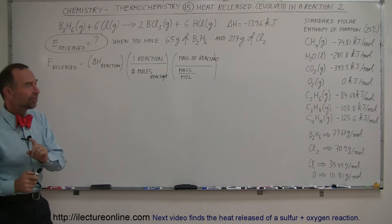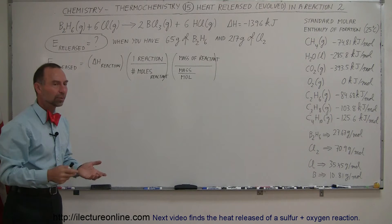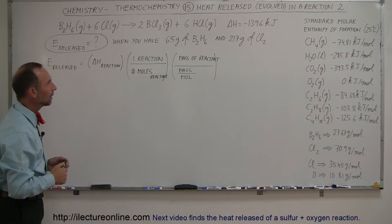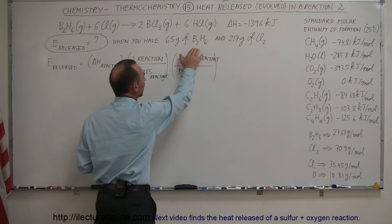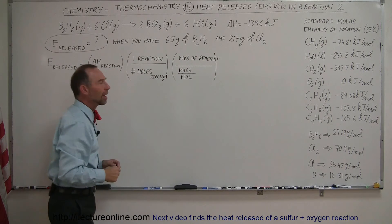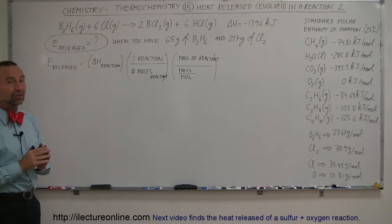The energy released in this reaction is 1,396 kilojoules, so it's an exothermic reaction. We are now limited to only having 65 grams of diborane and 217 grams of chlorine gas. So which of those two will be limiting the reaction?